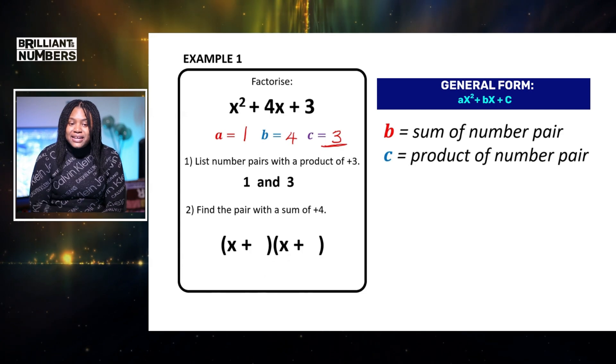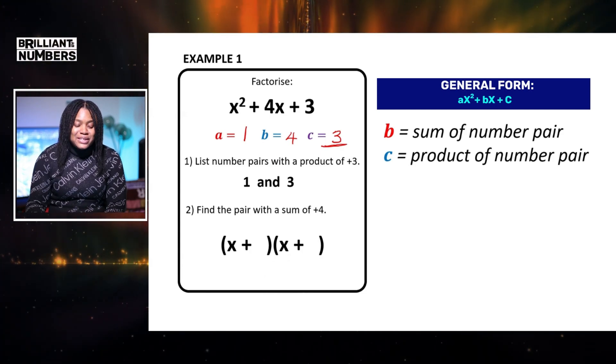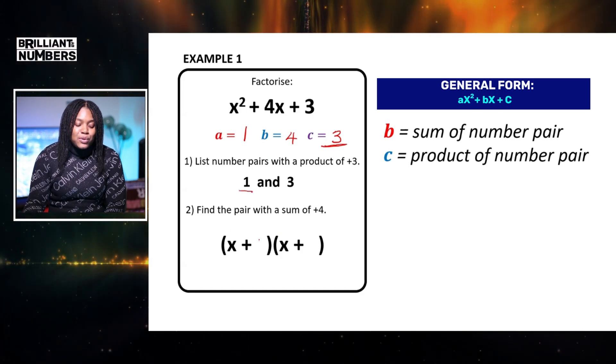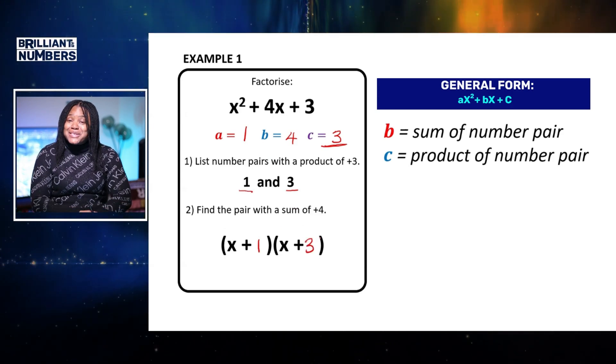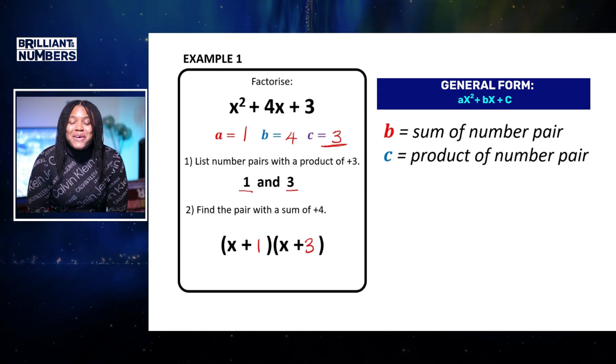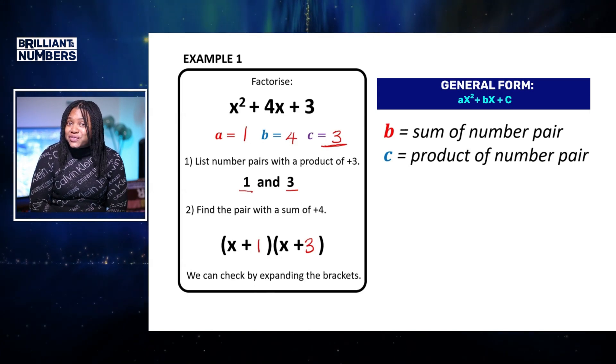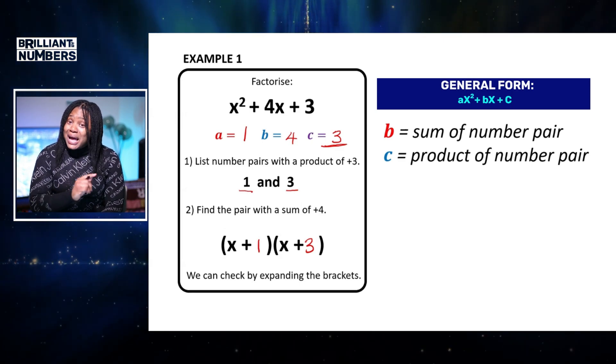So we're ready to put those in brackets. Very simple from here, we just simply need to put x plus first number pair was one and the second number pair was three. So we have now successfully factorized our first quadratic, but we could also prove if this is true by expanding the brackets.